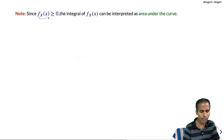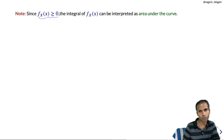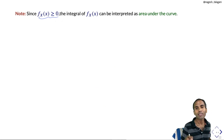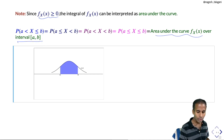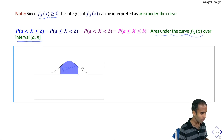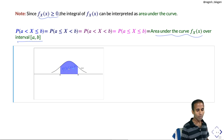Since the PDF is non-negative, the integral of the PDF is interpreted as the area under the curve over the interval [a, b]. The shaded portion in the figure represents this area, which equals the probability of a < X < b. Whether we include endpoints or not, the probability is the same for continuous random variables.